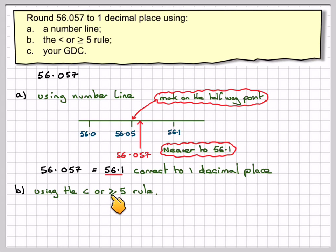Using the less than or greater than or equal to 5 rule, we write down our number. We want one decimal place, so that's the point there. We'll put our line there. What is the digit? It's a five, which is greater than or equal to five. Therefore, that five will make that zero one more, which is one.